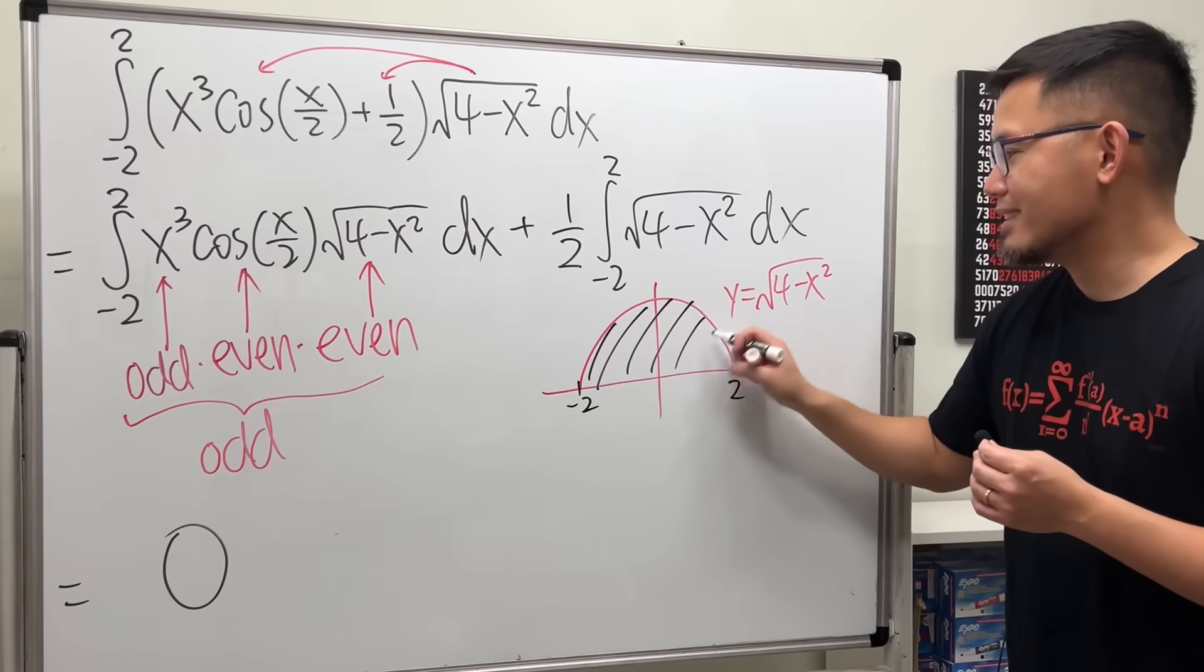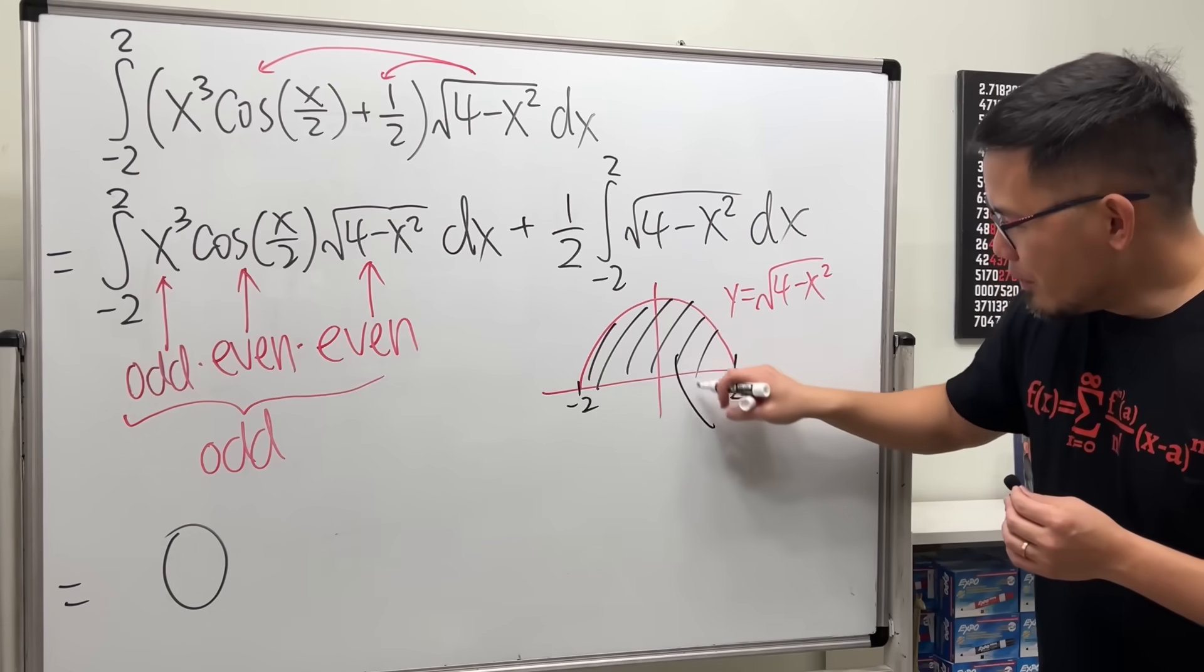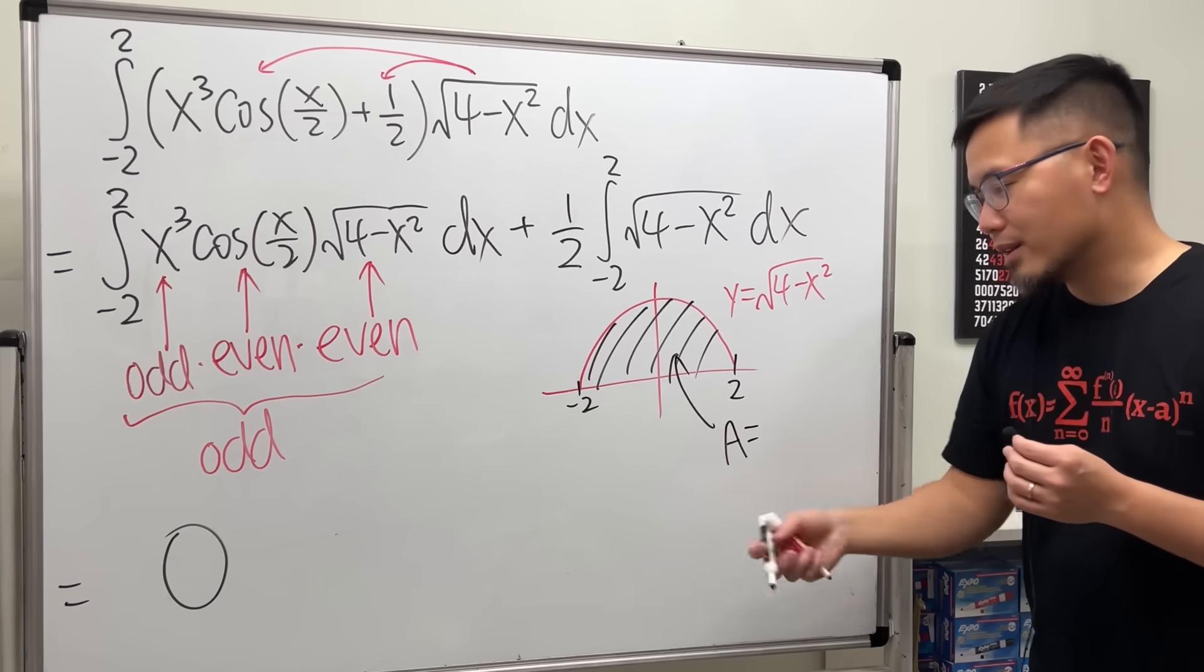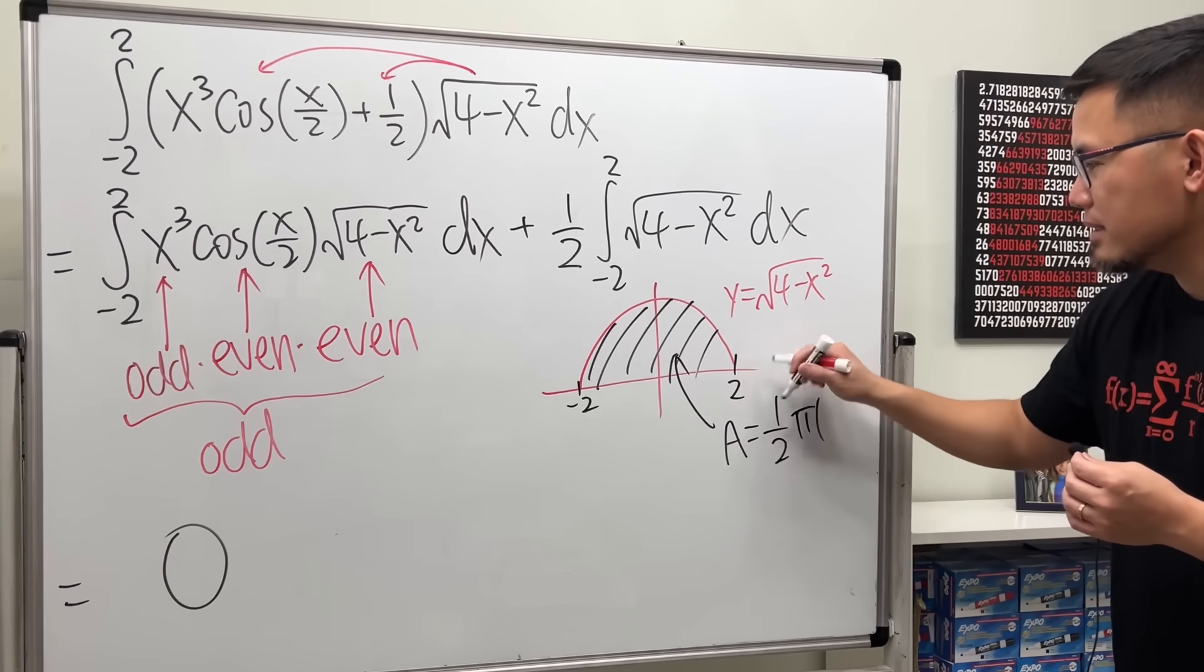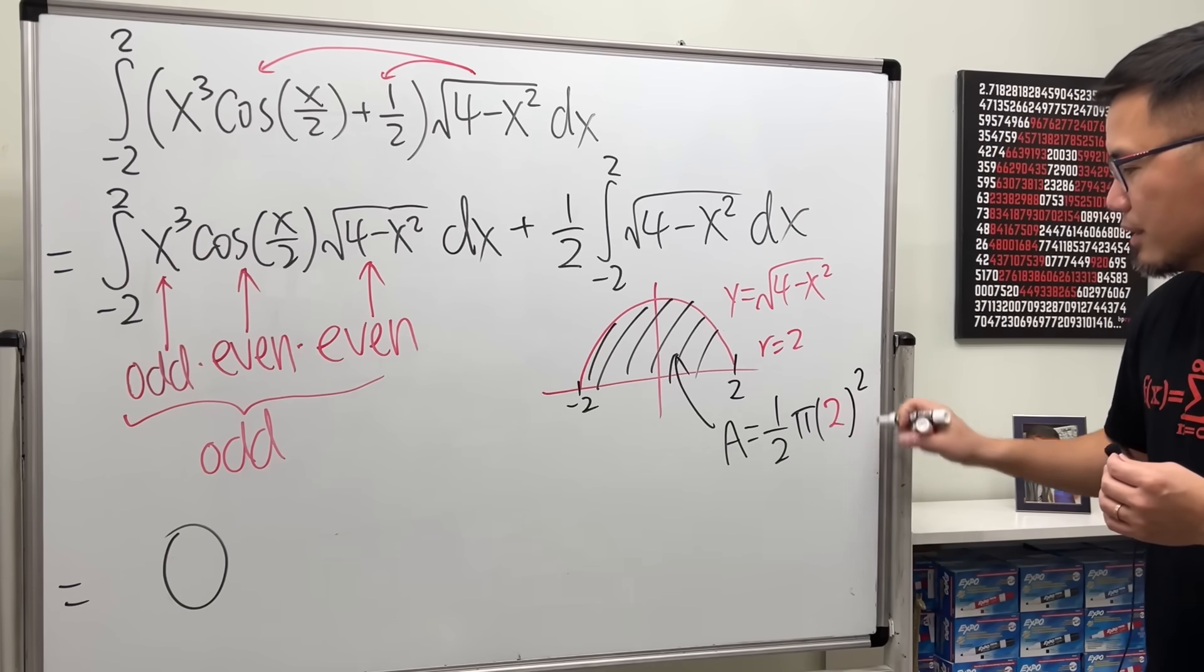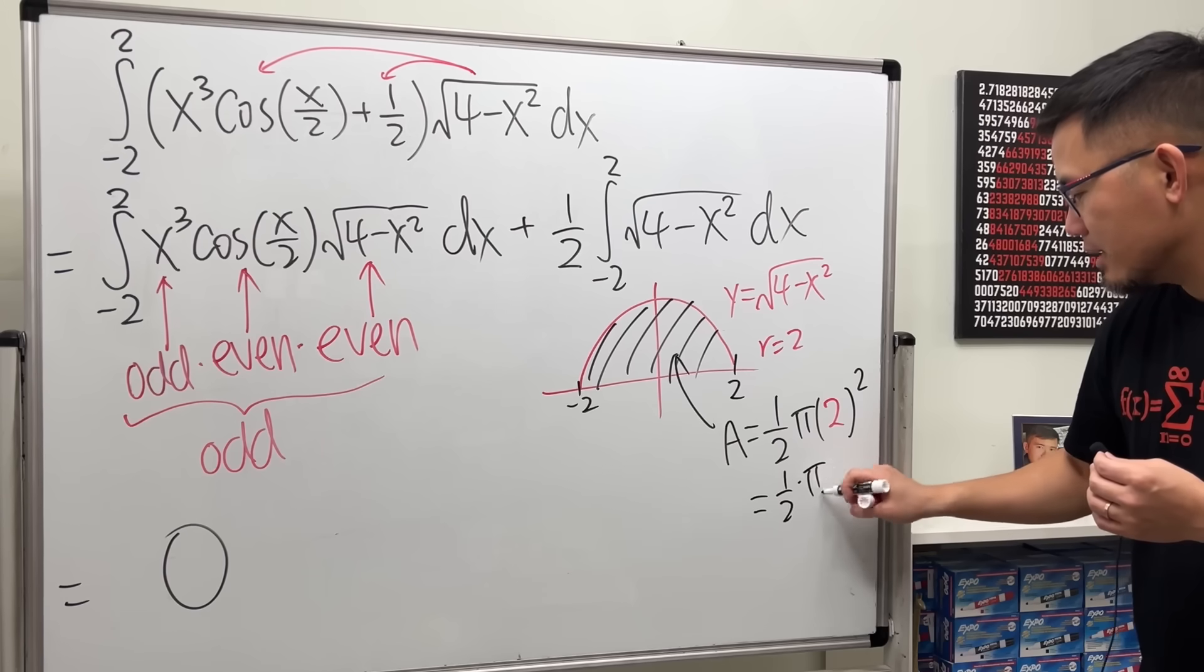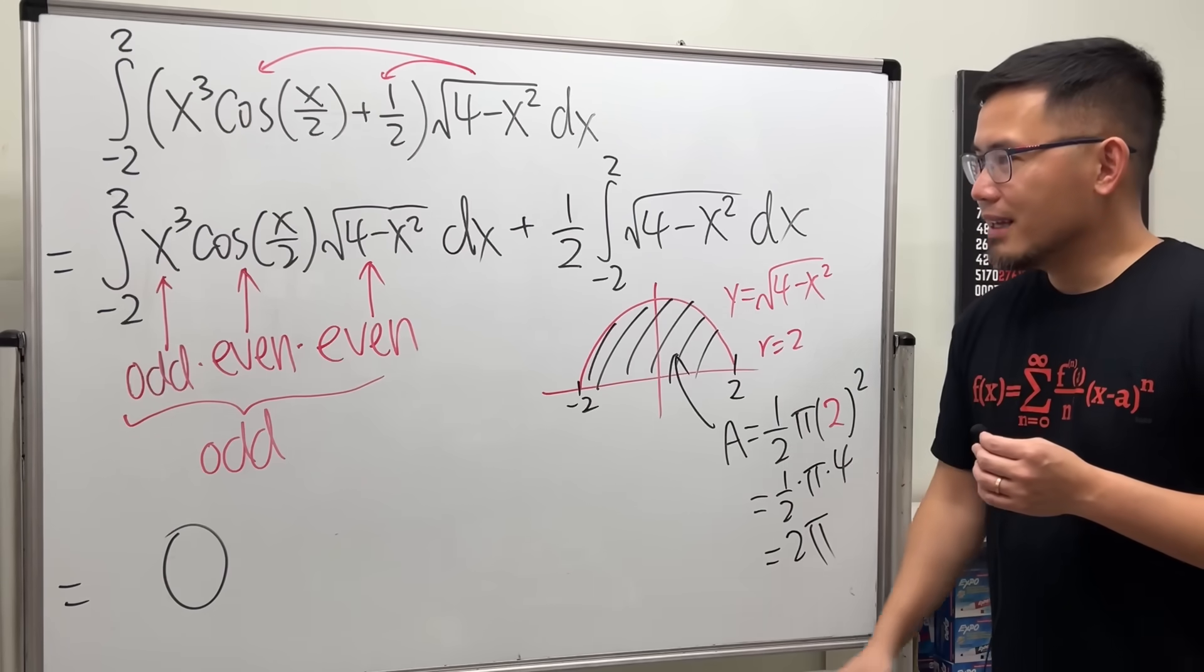Now we just have to worry about what the area is. Integration finds the area under the curve. The area here is equal to, this is a semicircle, so half times pi times the radius, which is 2 squared. Work that out: half times pi times 4. This right here is just 2 pi.